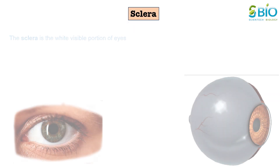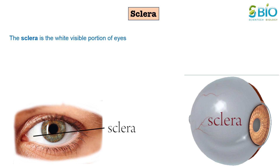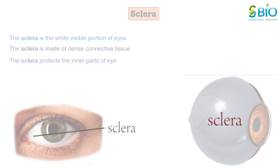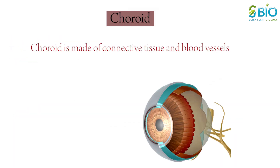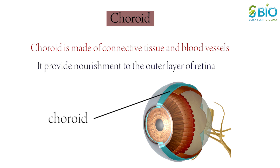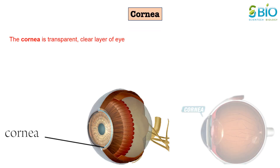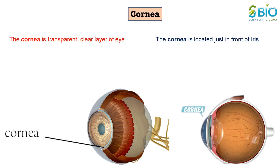Now let's see the parts of an eye that are visible externally. Sclera is the white visible portion of an eye. It is made up of dense connective tissue and protects the inner parts of the eye. Choroid is a layer of connective tissue and blood vessels that provides nourishment to the outer layer of the retina. The cornea is the transparent clear layer at the front and center of the eye. The cornea is so clear that one may not even realize it is there. The cornea is located just in front of the iris, which is the colored part of the eye. The main purpose of the cornea is to help focus light as it enters the eye.